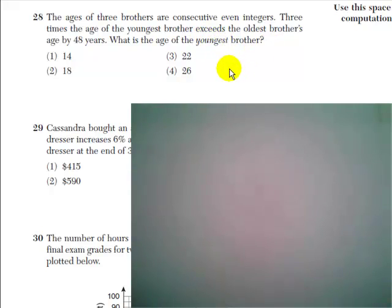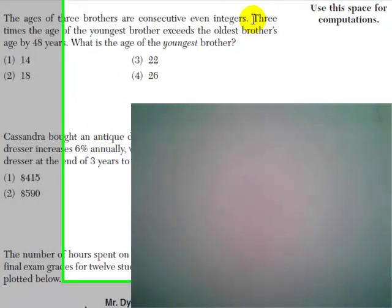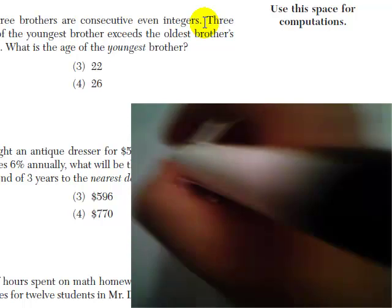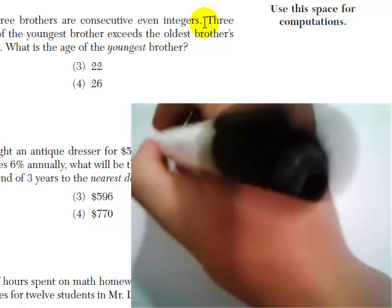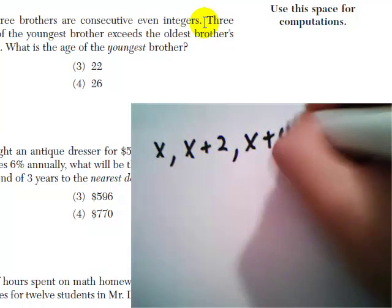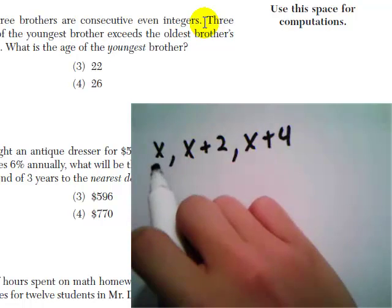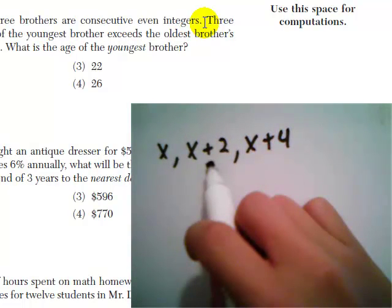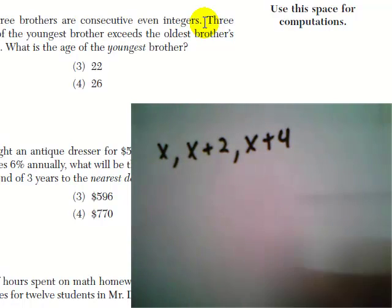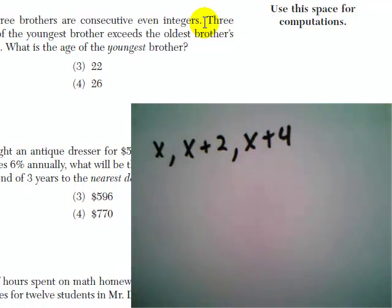Okay, so we're getting a little complicated here. Let's break this down bit by bit. The ages of three brothers are consecutive even integers. I'm going to represent them as x, x plus 2, and x plus 4. So x represents the age of the youngest brother, x plus 2 is the next older brother, x plus 4 is the oldest. That gives us our consecutive even integers.